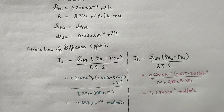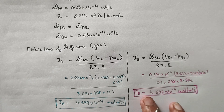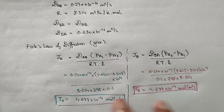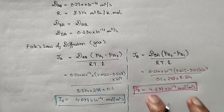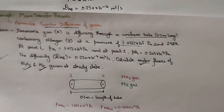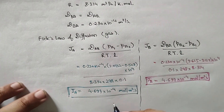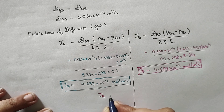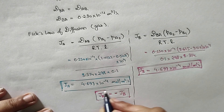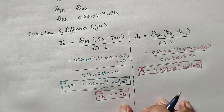We see that J_A and J_B have the same value. This means the moles of ammonia transferred from 0.1 to 0.2 and the moles of nitrogen transferred from 0.2 to 0.1 per unit time per unit area are equal. That is why this concept is called equimolar counter diffusion. Remember: J_A = J_B in magnitude, but you always put a negative sign on one to indicate they travel in opposite directions.